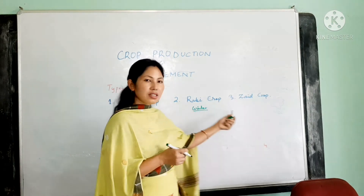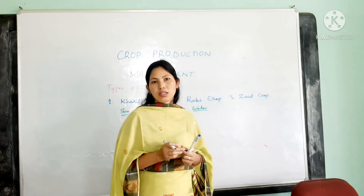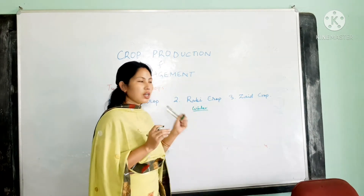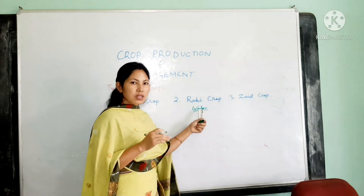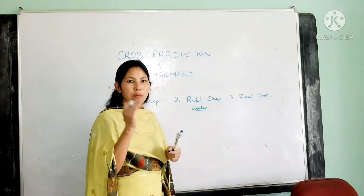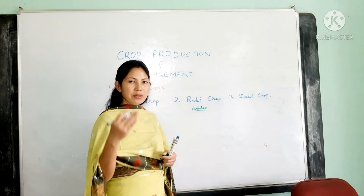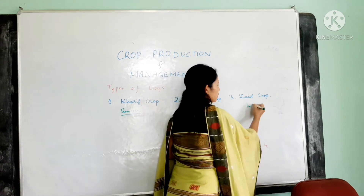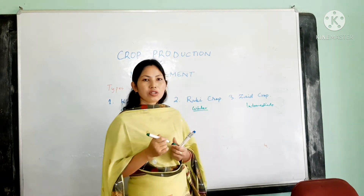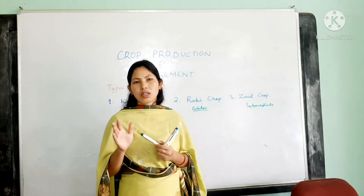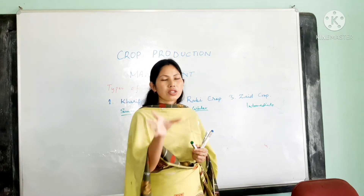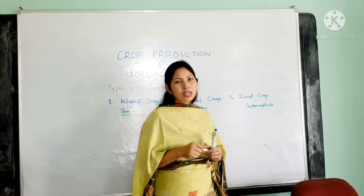The third type is the Zaid crop. These are intermediate crops grown during the intermediate period between Kharif and Rabi. While Rabi crops grow during winter from November through February, Zaid crops are grown from March, April, and May. For example, watermelon and muskmelon. Zaid crops do not require too much or too little water — they need an average amount of water. These are known as Zaid crops.